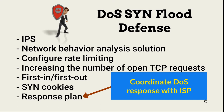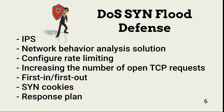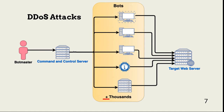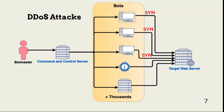Before looking at smurf attacks, we need to understand distributed denial of service attacks, or DDoS. DDoS attacks use thousands or hundreds of thousands of recruited systems to launch attacks. In a DDoS SYN flood attack, a threat actor would cause each member of a bot army to send SYN packets to the target server. The effect would be fast and massive enough to make most of the defense steps we discussed previously ineffective. As shown, DDoS attacks are typically launched by bot masters who have installed malware on endpoint devices, including IoT, that enrolls the infected devices into a bot army. The bot army is controlled by a command and control server.